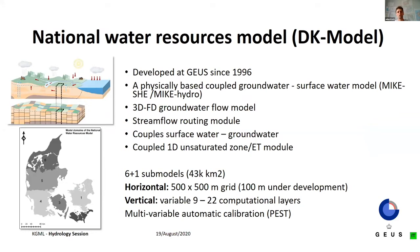Before I talk about our machine learning work, I want to cover our process-based model — the national water resources model, the DK model. We've been working on this for over 25 years. It's a process-based coupled groundwater surface water model, set up to run in seven sub-models covering 43,000 square kilometers. Currently it runs at 500-meter resolution, and a single run takes around 10 hours for the whole country over a 20-30 year period. We're also currently working on a 100-meter model.